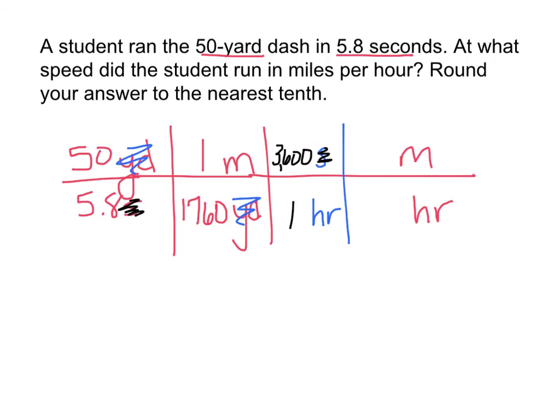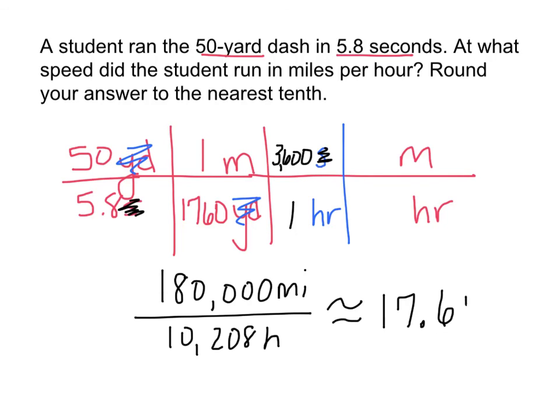So if you actually multiplied that, 50 times 3,600 gives you 180,000 miles, and on bottom 5.8 times 1,760 gives you 10,208 hours. Well if you divide 180,000 divided by 10,208, you would get approximately rounded to the nearest tenth 17.6 miles per hour. Either way is acceptable but your answer would be 17.6 miles per hour.